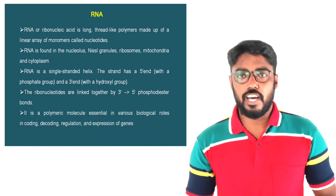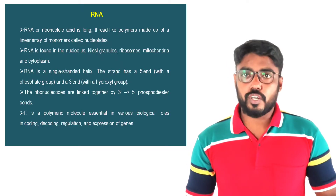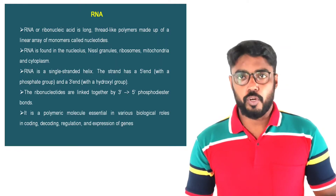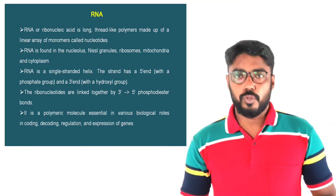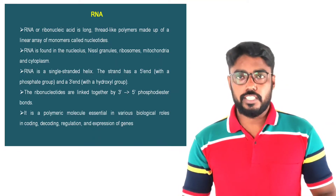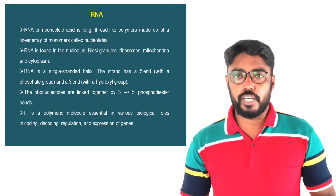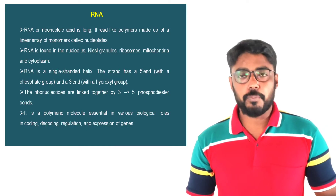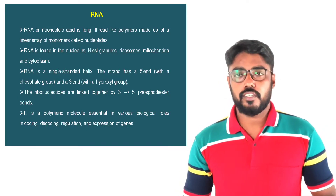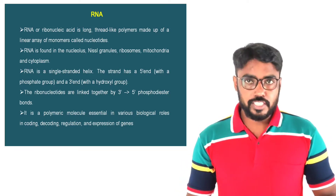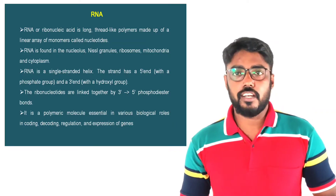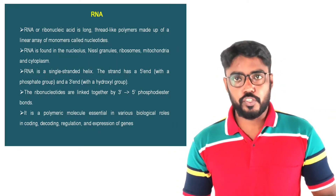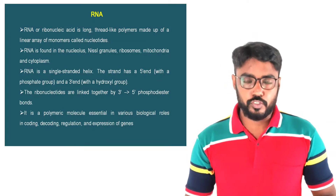RNA, or ribonucleic acid, are long thread-like polymers of monomers called nucleotides. RNA is mainly found in the nucleolus, microsomal granules, cytoplasm, and mitochondria. RNA is a single-stranded helical molecule having a 5' phosphate group and a 3' hydroxyl group.